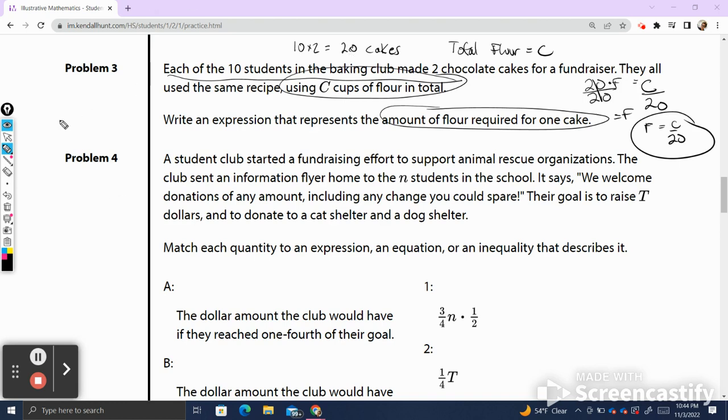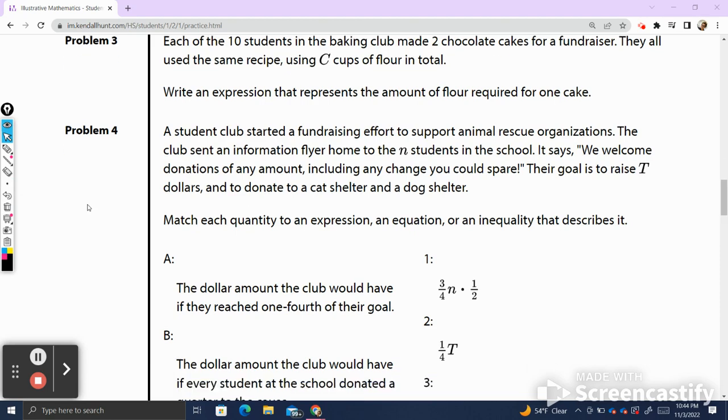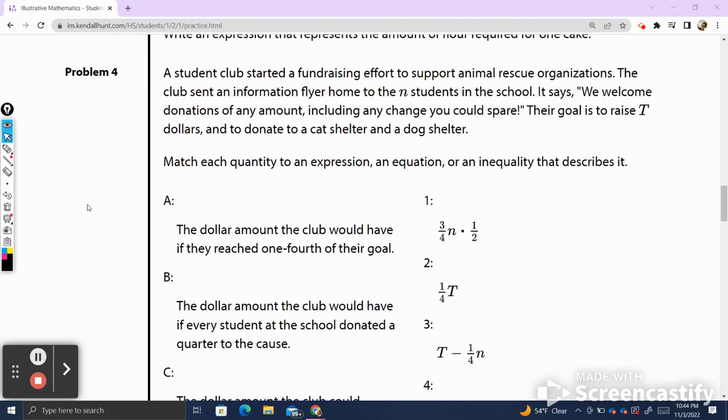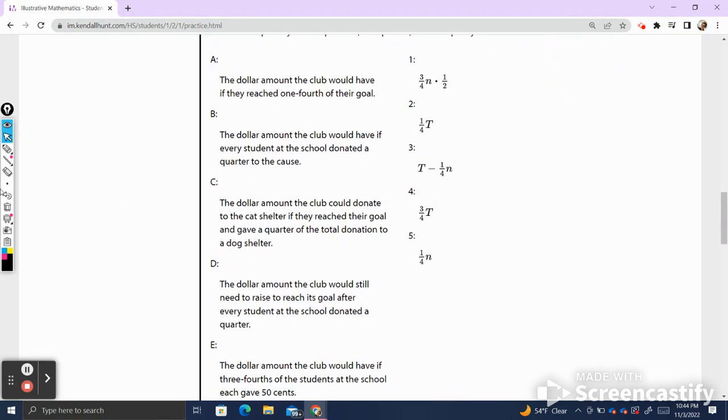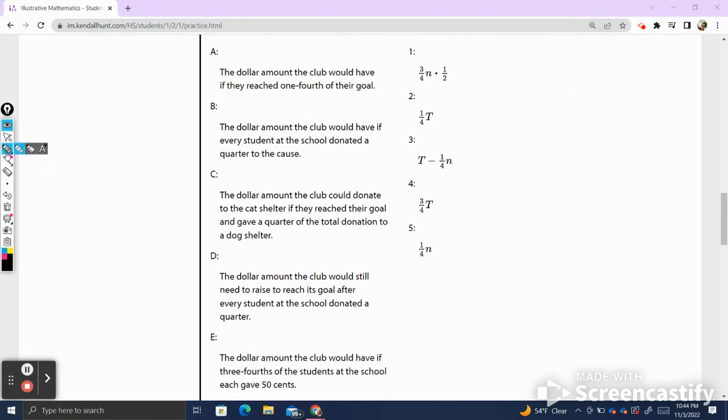Problem number four. A student club started a fundraising effort to support animal rescue organizations. The club sends an information flyer home to the n students in the school. It says, we welcome donations of any amount, including any change you could spare. Their goal is to raise T dollars and to donate to a cat shelter and a dog shelter. Match each quantity to an expression or an equation or an inequality that describes it. This is similar to the last question we did.